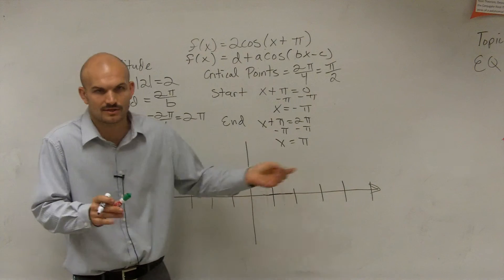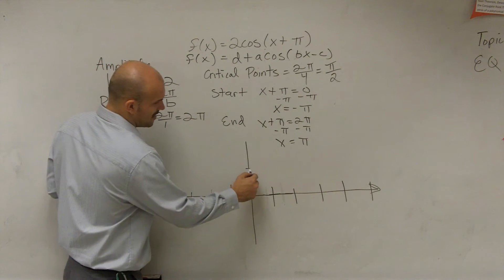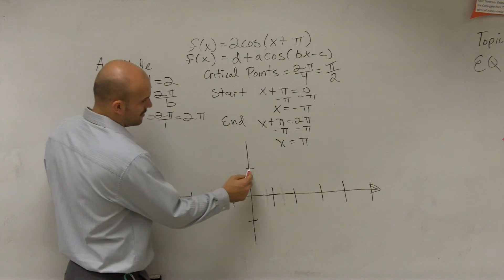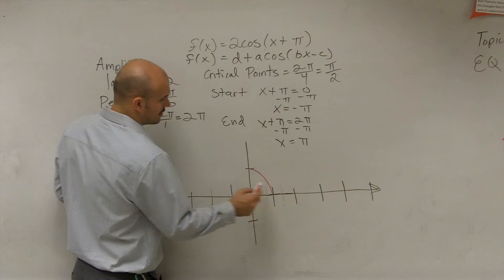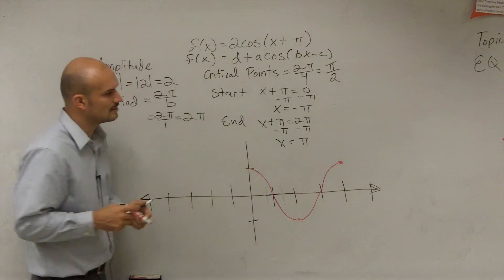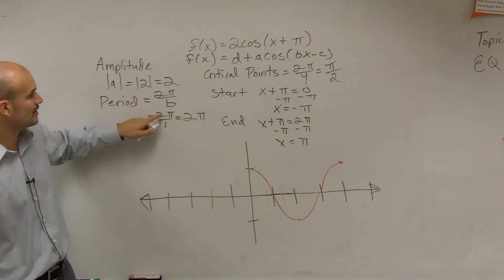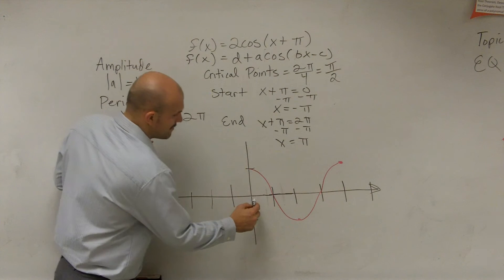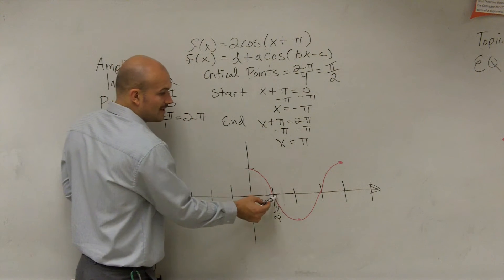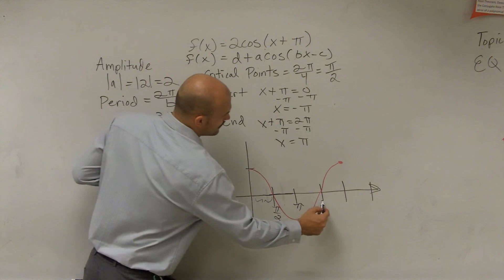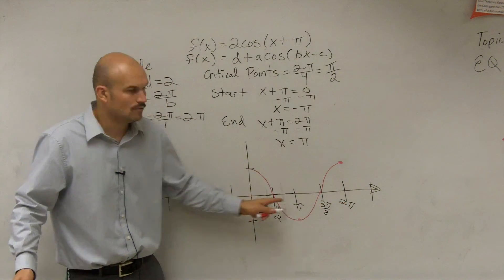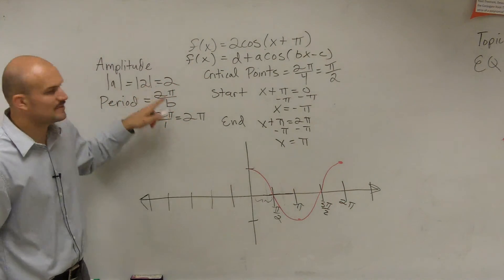The parent function for cosine had an amplitude of 1, meaning it went up to 1 and down to negative 1. One period of the cosine graph started at (0, 1), crossed down to negative 1, came back up, and finished at (0, 1) again at 2π. The critical points were π/2 apart from each other, giving points at 0, π/2, π, 3π/2, and 2π. That's the parent graph, and our intervals are the same because we have the same period.